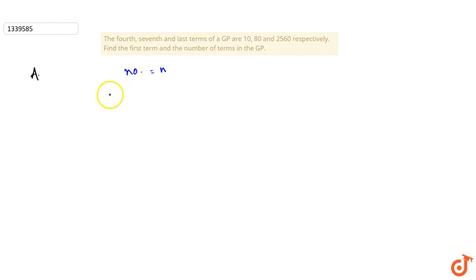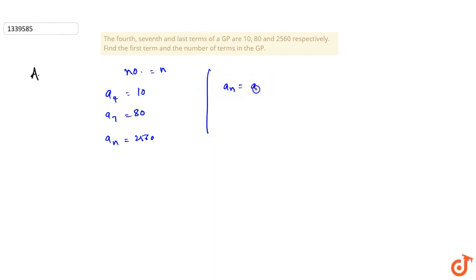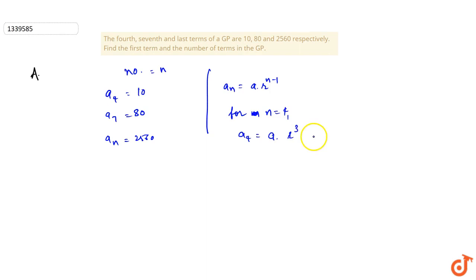Let the number of terms in the GP be n. So a4 is equal to 10, a7 is equal to 80, and an is equal to 2560. We know that the general term of a GP is a_n equals a times r to the power n minus 1. So for n equals 4, a4 equals a times r to the power 3, which equals 10. And a7 equals a times r to the power 6, which equals 80.